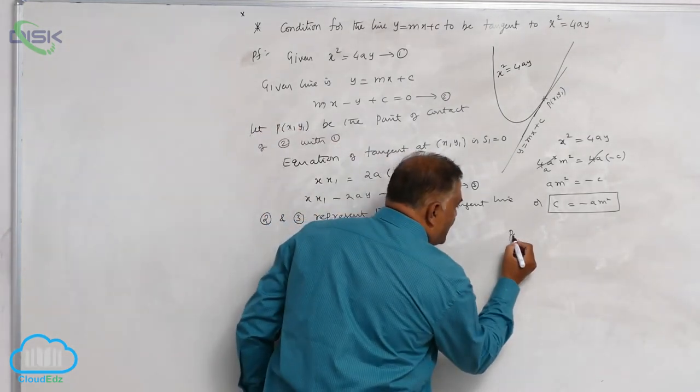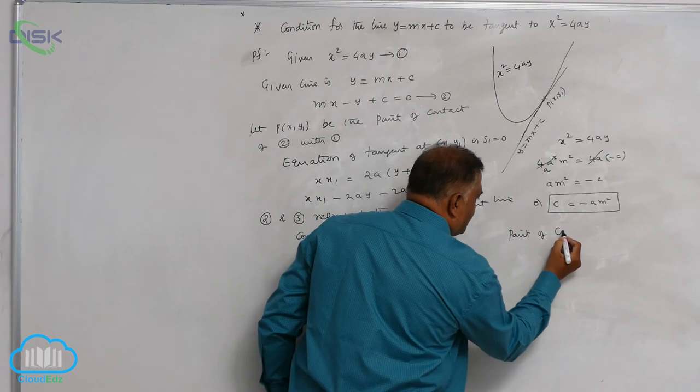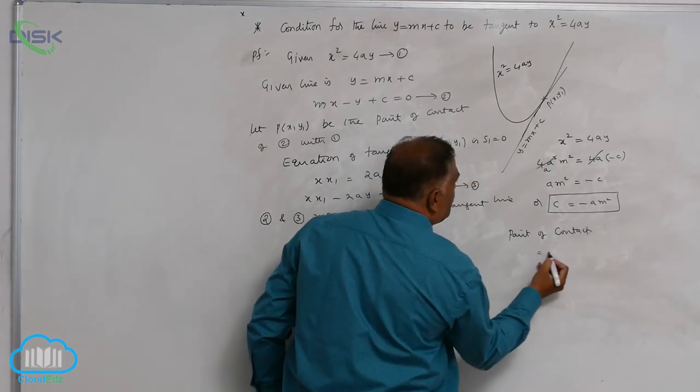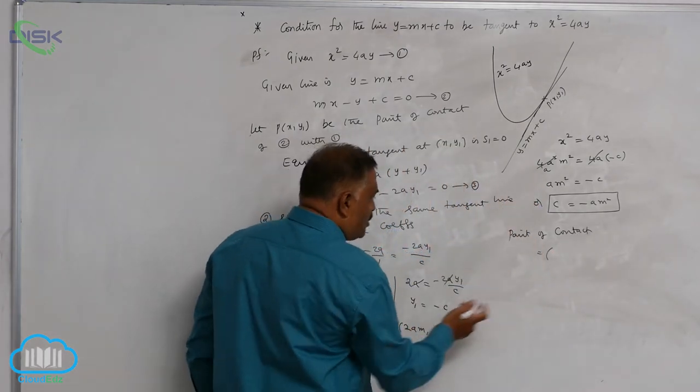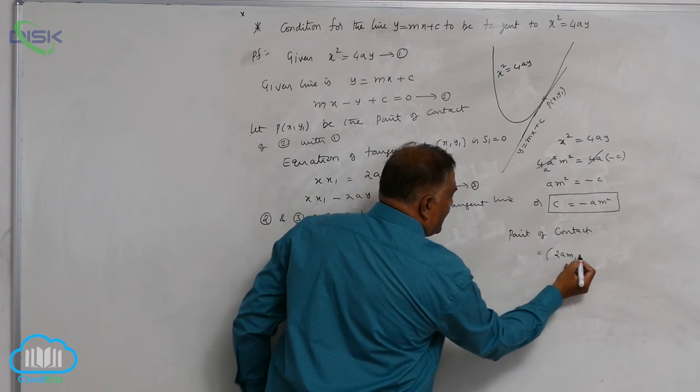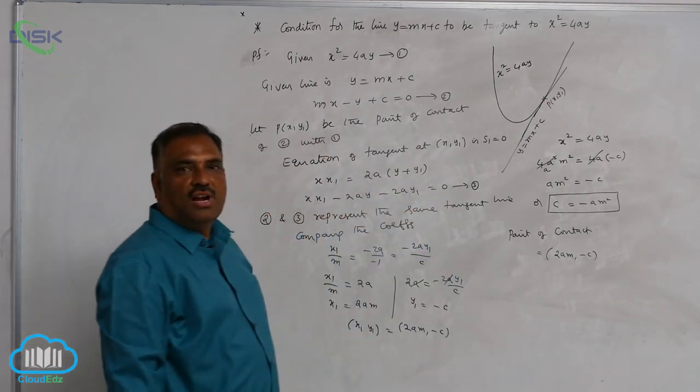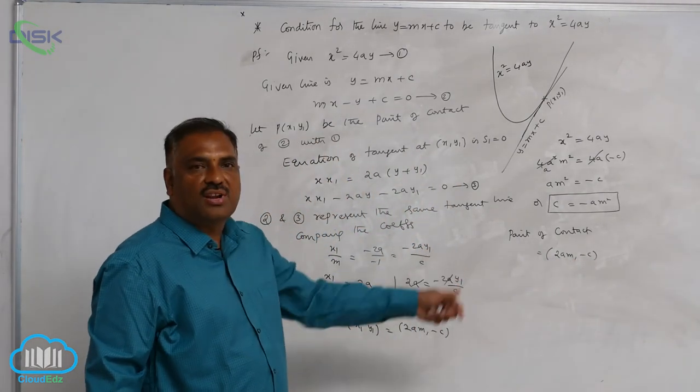And further, point of contact is given by the formula (2am, minus c). Of course, c equal to minus am square, that is also the condition applied.